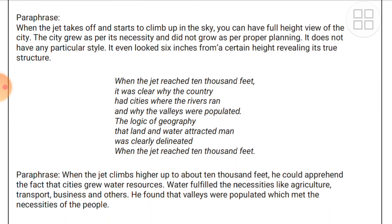When the jet reached 10,000 feet, it was clear why the country had cities where the rivers ran, and why the valleys were populated. The logic of geography — that land and water attracted men — was clearly delineated when the jet reached 10,000 feet.